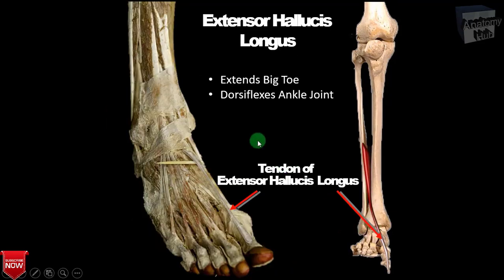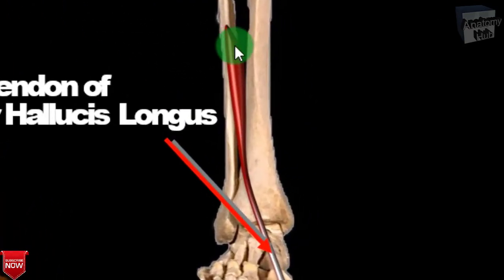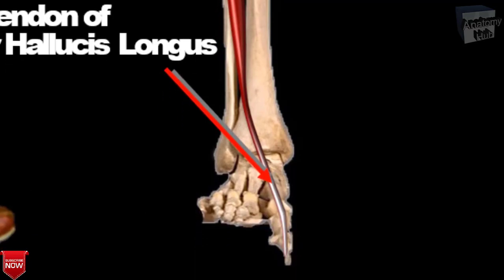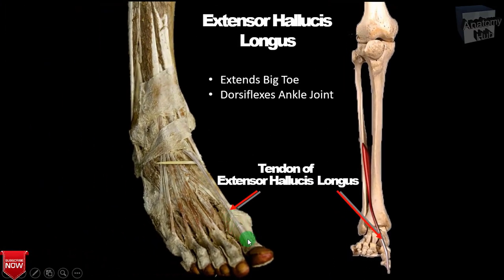The extensor hallucis longus takes origin from the middle one-fourth of the anterior surface of the fibula and the interosseous membrane. Its insertion is at the base of the distal phalanx of the big toe. Its nerve supply is again the deep peroneal nerve, and its action is extension of the big toe along with dorsiflexion and inversion of the foot.